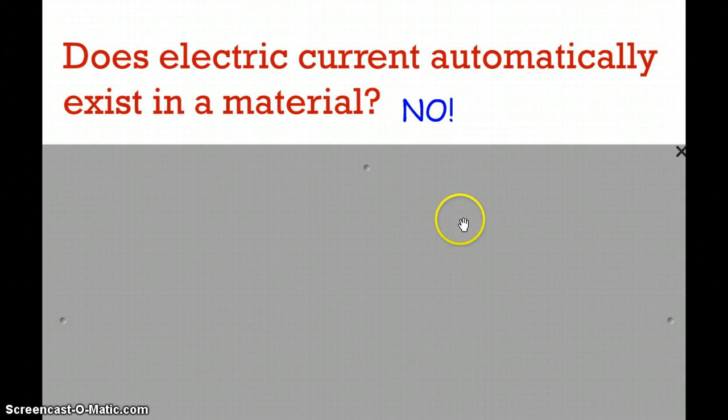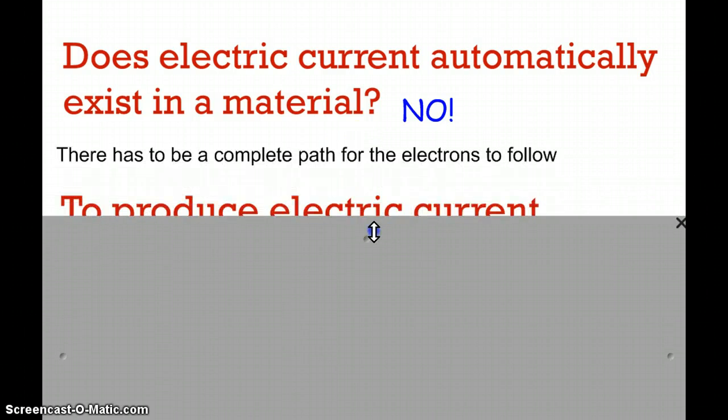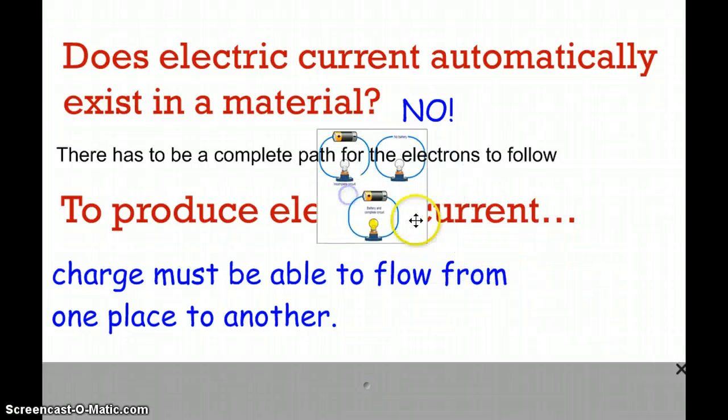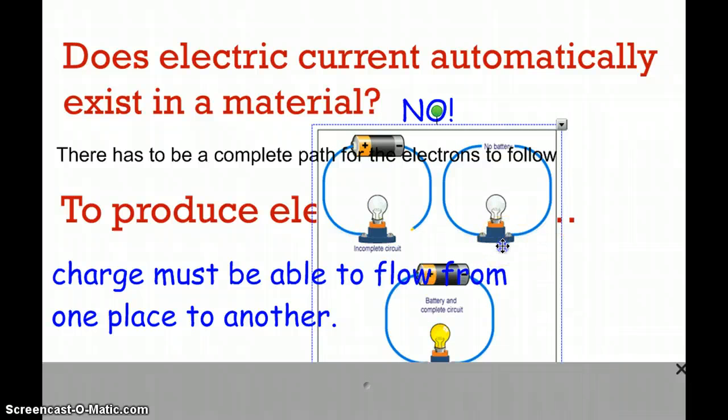Does electric current automatically exist in a material? No, it does not. I can have a peanut butter and jelly sandwich, but it doesn't mean that electric current is automatically going to exist. Because there has to be a complete path for the electrons to follow. If there's not a complete path, there's not going to be an electric current. There also has to be a power source. So to produce an electric current, the charge must be able to flow from one place to another.